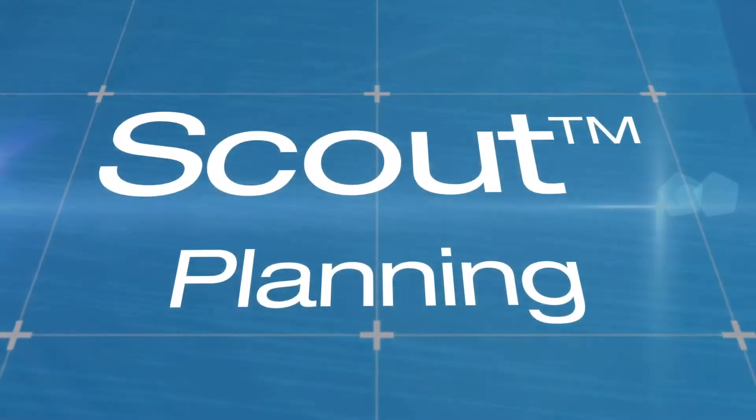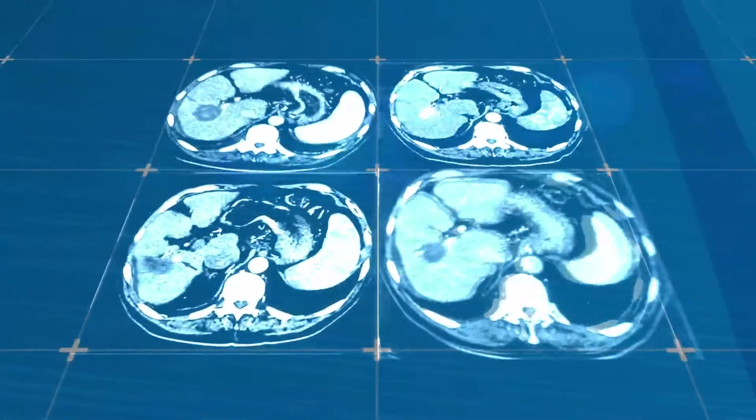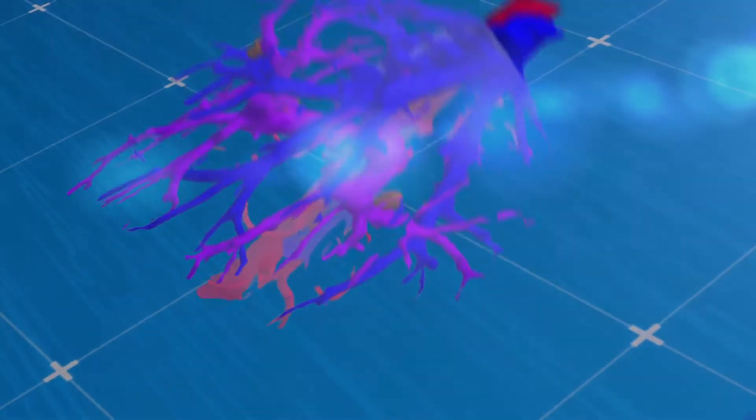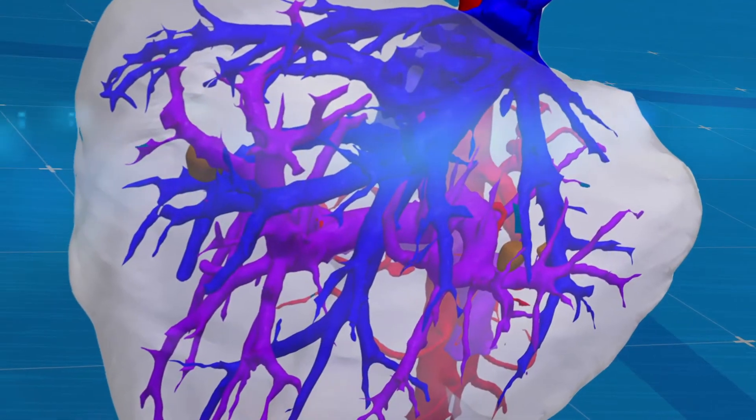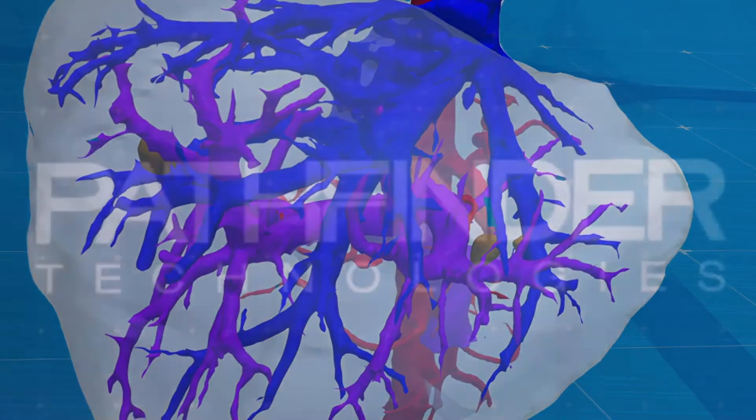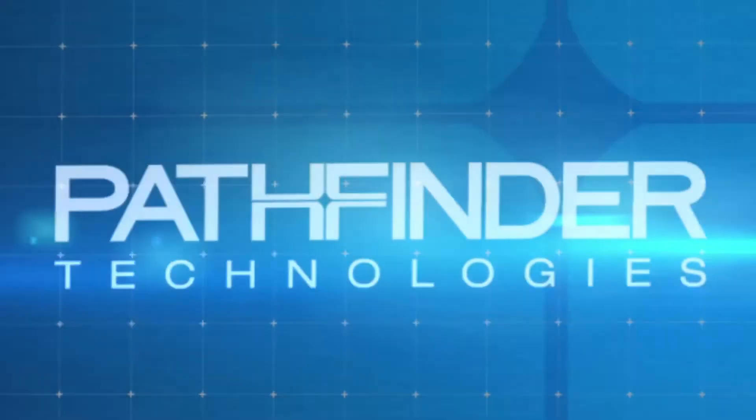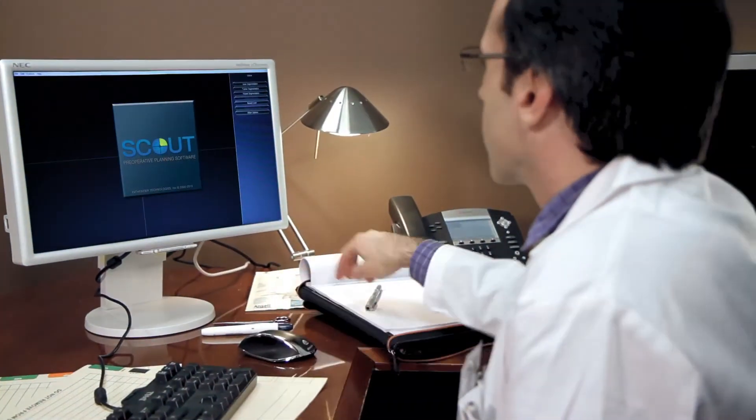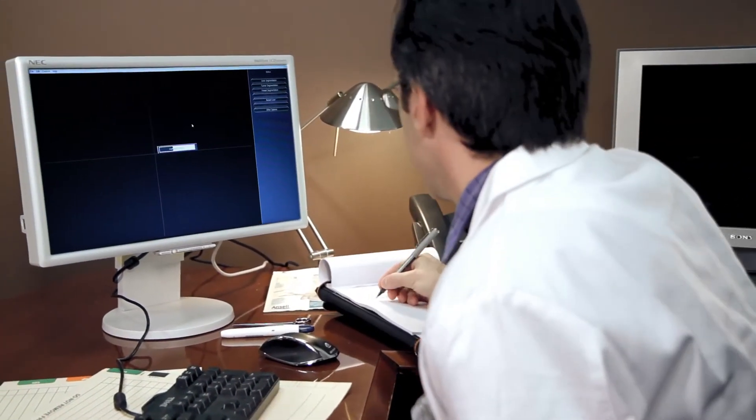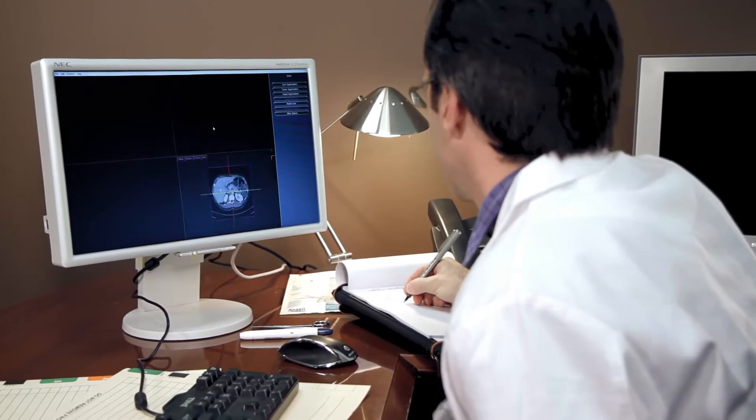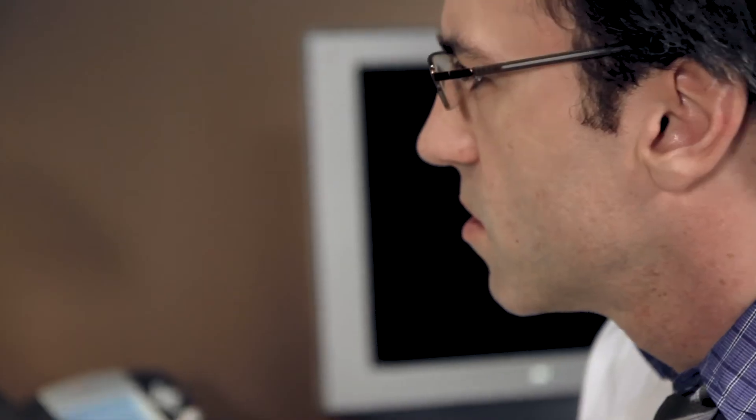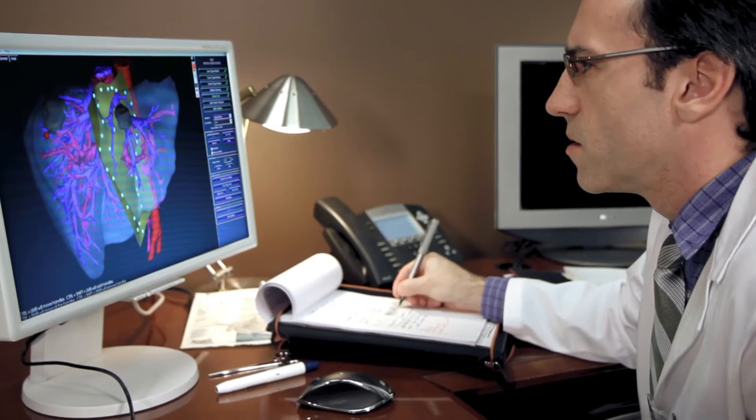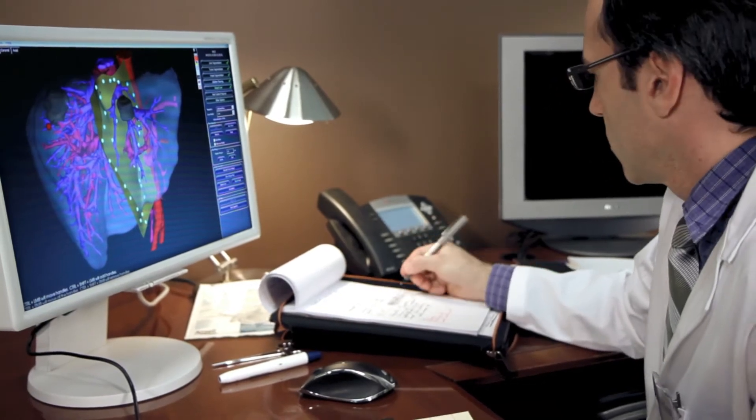Scout planning software takes a patient's preoperative CT or MRI images and builds a three-dimensional model of the target organ, enabling a surgeon to visualize the precise location of a tumor and surrounding sensitive blood vessels, and then to plan the best trajectory for surgery. Scout also provides instantaneous volumetric feedback for surgical resections, helping a surgeon determine the most optimal plan for each patient.